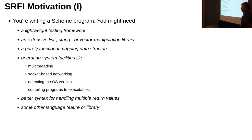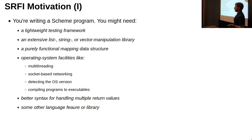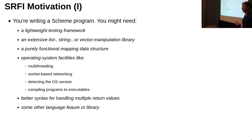Imagine you are writing a Scheme program. You might need any number of extensions to Scheme. If you have a Scheme implementation, it might not be good enough — you might need threading, OS interaction, better syntax for multiple return values. There are all kinds of things you might want to add to the language which aren't there already.